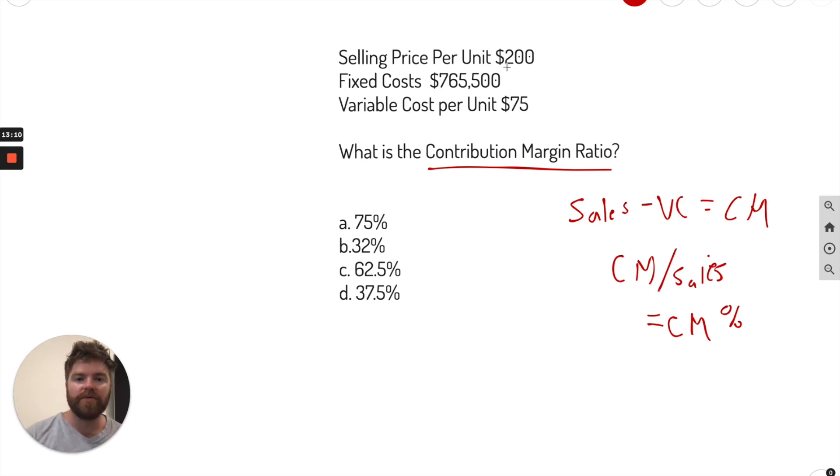So let's plug it in. So we know our selling price per unit is going to be $200, and our variable cost is $75. I'll just do it up here. $200 minus the $75, we get $125 contribution margin. We take that margin divided by sales. That's your margin ratio or margin percentage. 62.5%, letter C. Not too bad. If you know the formulas, you're good. But you have to know the formulas. That's one of the most important parts of this chapter.